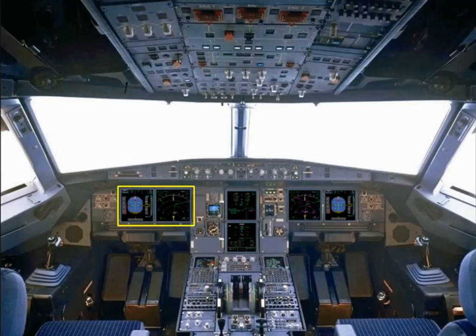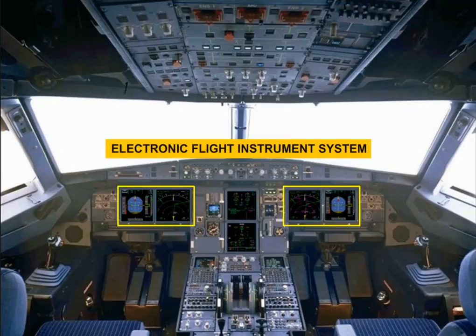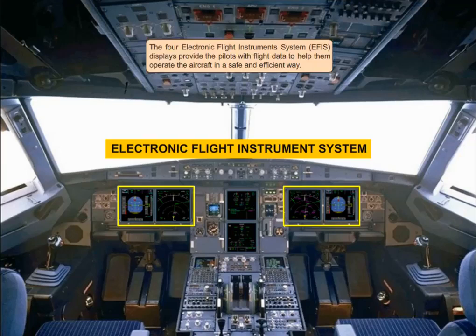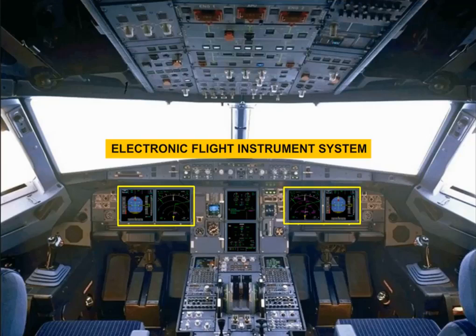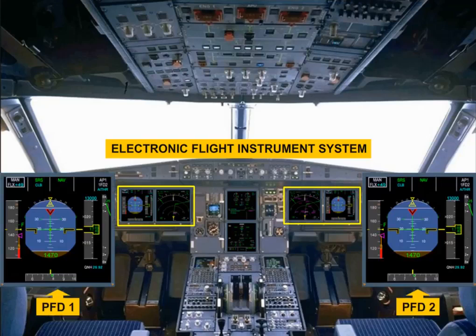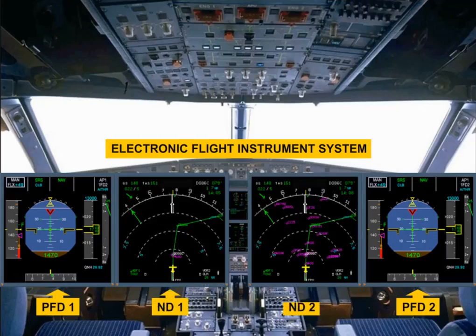The four electronic flight instrument system, EFIS, displays provide the pilots with flight data to help them operate the aircraft in a safe and efficient way. Flight parameters are displayed on primary flight displays, PFD, while navigation data is displayed on navigation displays, ND.